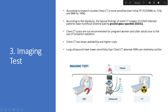There are imaging methods like MRI, ultrasound, and CT. According to research, chest CT is more sensitive than initial RT-PCR. Typical findings of chest CT in COVID patients include ground glass opacity. However, CT scans are not recommended for pregnant women and older adults due to ionizing radiation, and have lesser availability and high cost. Lung ultrasound has lower sensitivity than chest CT, while MRIs are accurate but relatively very costly.